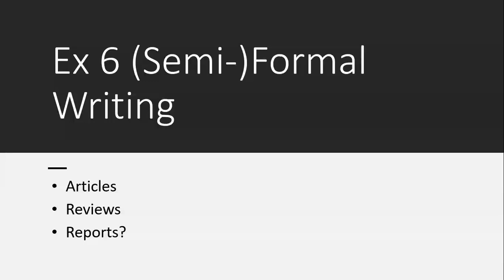On exercise six you could be asked to write one of three texts: an article, which we've studied; reviews, which we've studied — remember when we did Modern Family and Stranger Things; and finally a report, which is what we're going to focus on this week. After this, we will have learned all three text types you need for your ESL exam. The three texts are relatively similar — just some small structural and audience changes.